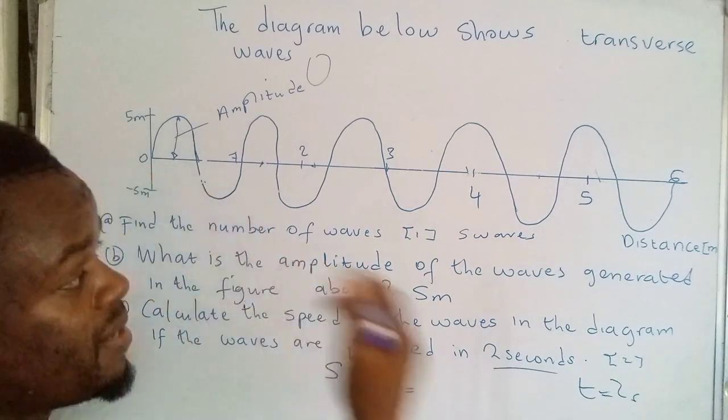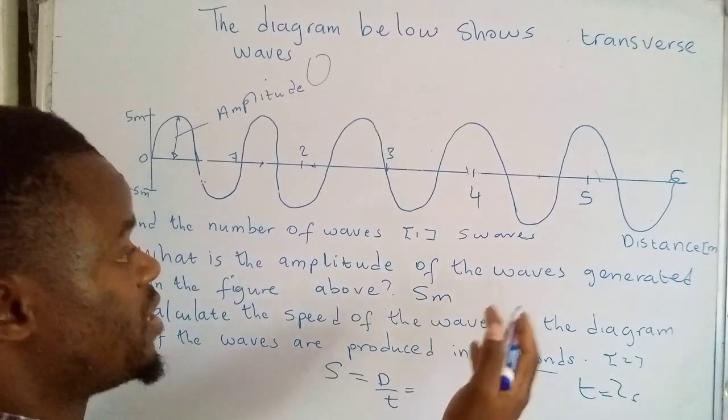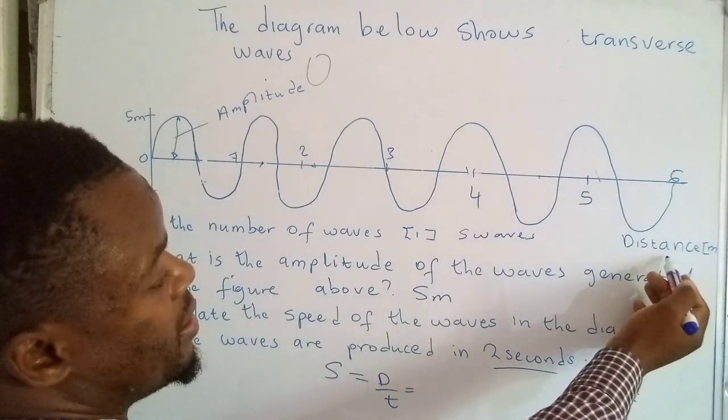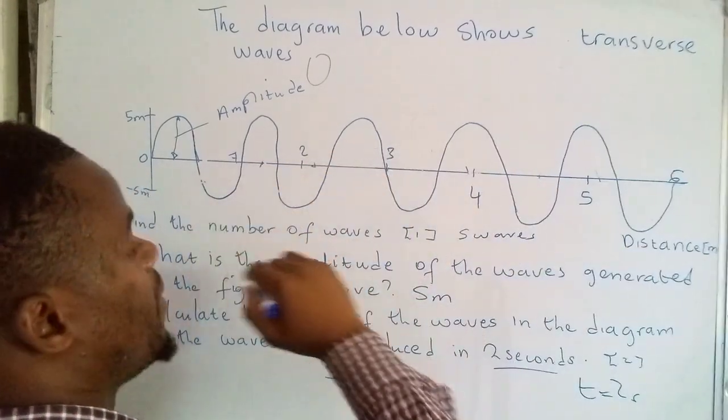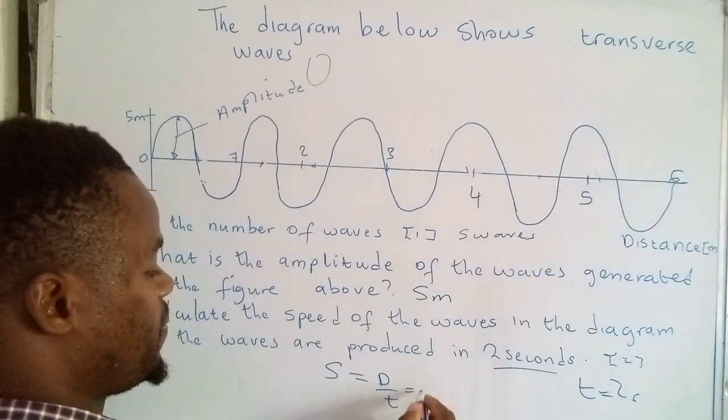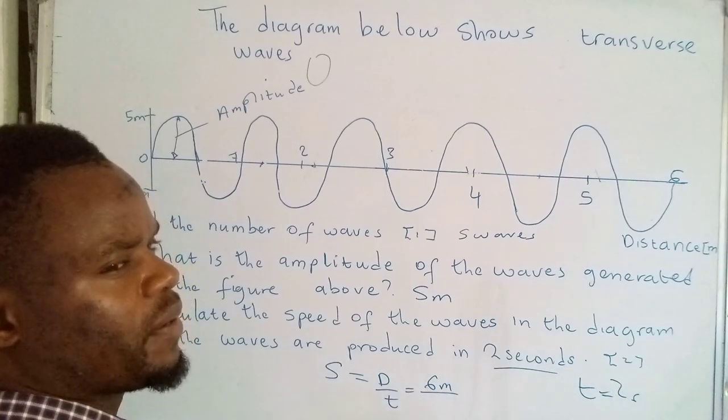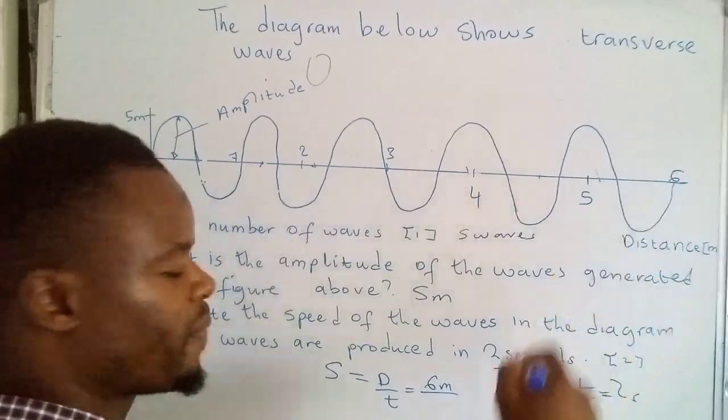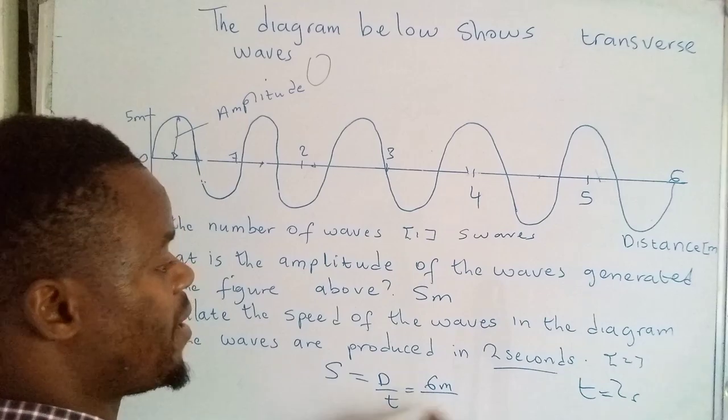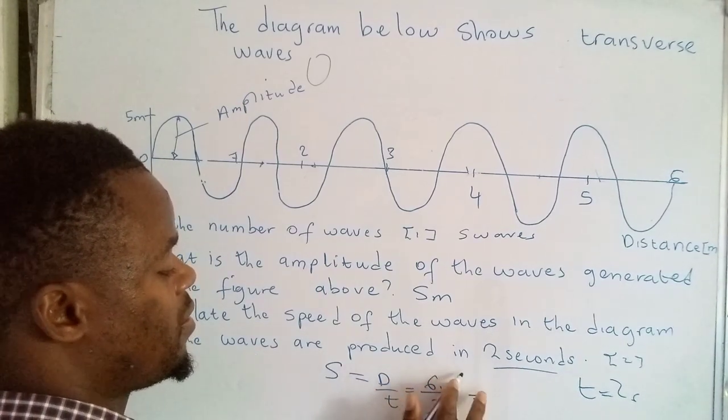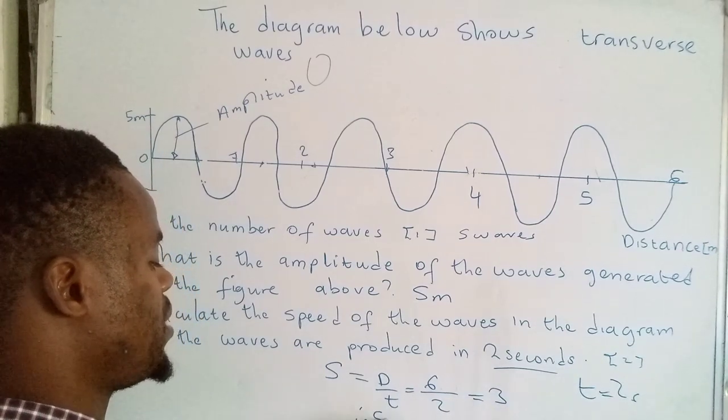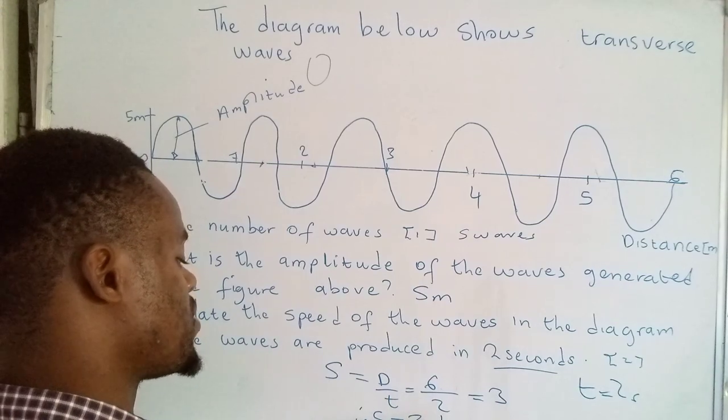So what is the maximum distance that has been covered by these waves? This line here actually denotes distance, so the distance is actually six meters. We can say three meters per second. So we can say therefore speed is equal to three meters per second.